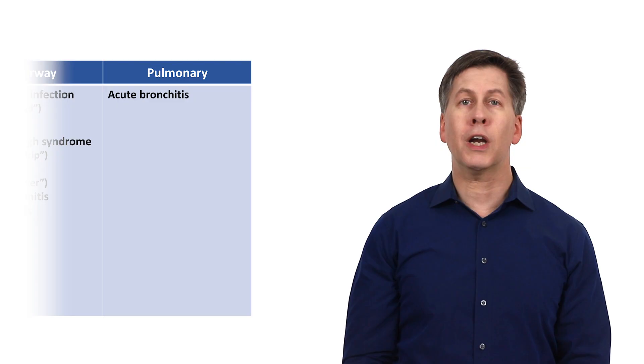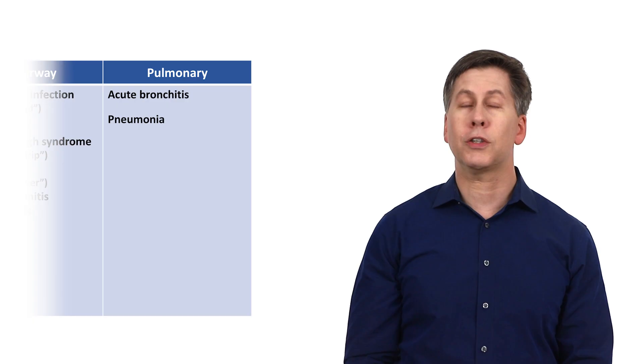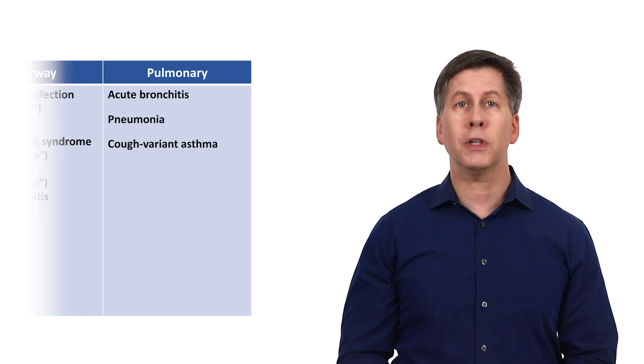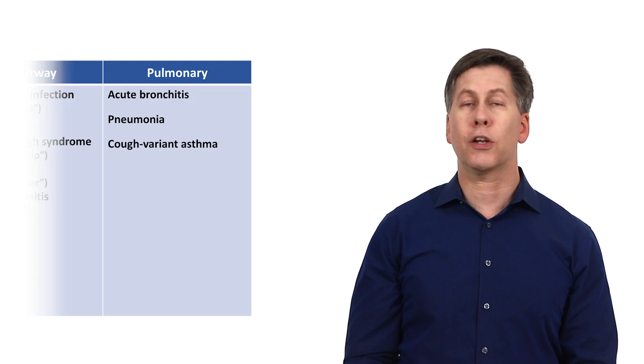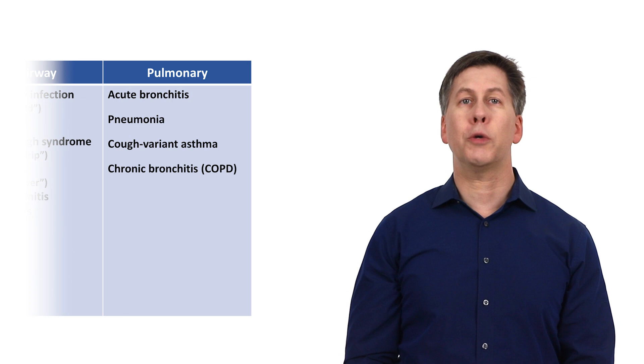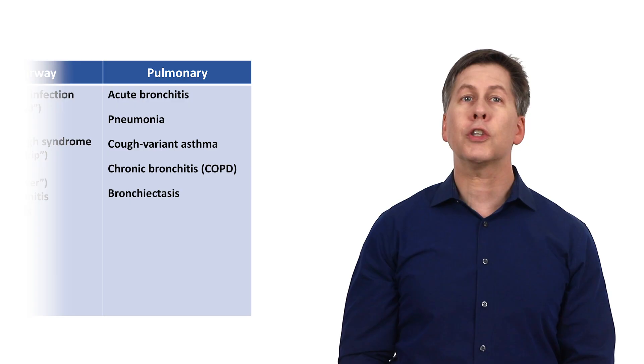Under pulmonary, we also have pneumonia, which includes not just bacterial, but also includes fungal and mycobacterial pneumonias as well. And as previously mentioned, we also have cough variant asthma, which is just like asthma, but the predominant symptom is an episodic allergy-mediated cough rather than wheezing or dyspnea. The chronic bronchitis subtype of COPD and bronchiectasis both cause a chronic productive cough too.